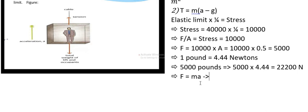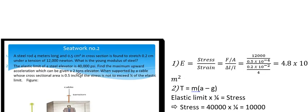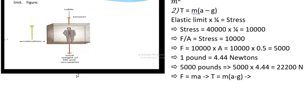The next formula we need is F equals ma. We can substitute the tension for F. The tension in this situation is about 22,200 newtons. We replace T, and m is about 2 tons, which we put as 2 multiplied by 10 to the power of 3. This is the formula.